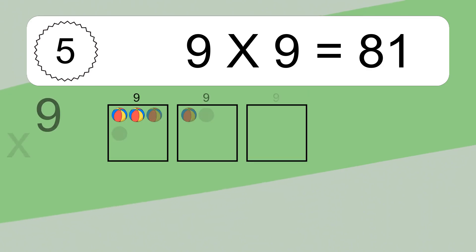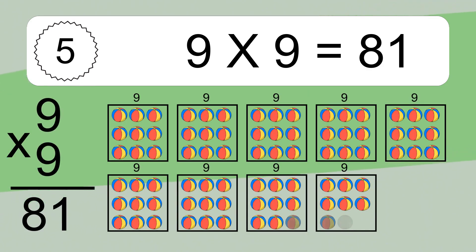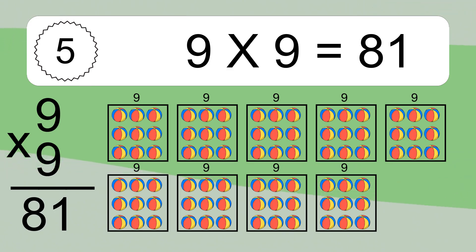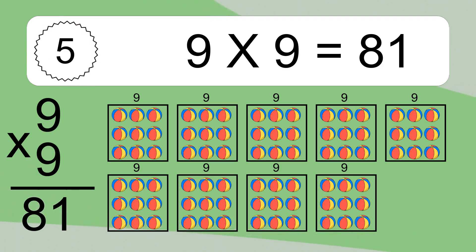9 times 9 equals 81. We have 9 boxes, and each box has 9 colorful balls inside. If you count all the balls in all the boxes together, you will have 9 times 9 balls. This equals 81 balls.